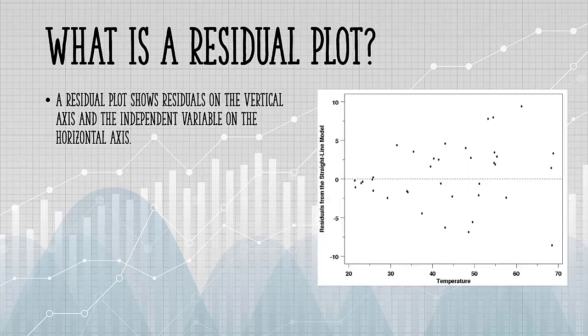On a residual plot, these residuals are plotted on the vertical axis, and the independent variable is plotted on the horizontal axis.